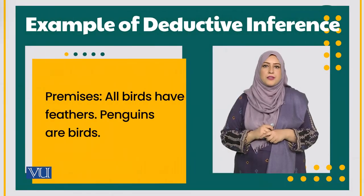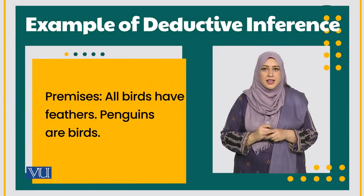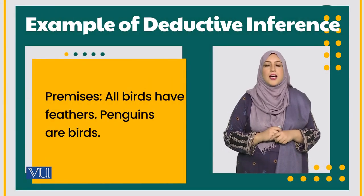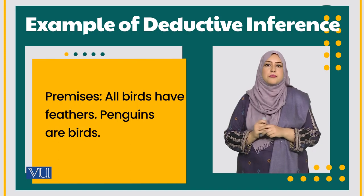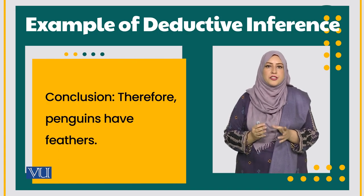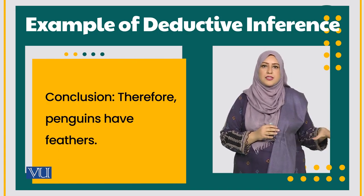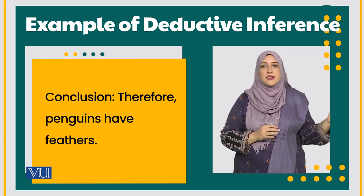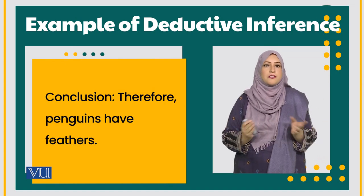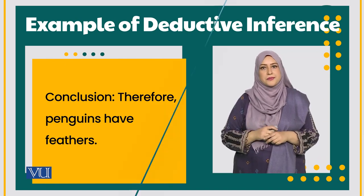For example, as we know that birds have feathers and penguins are birds, then we can infer with this information that since penguins are birds and birds have feathers, therefore penguins have feathers.